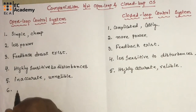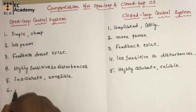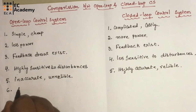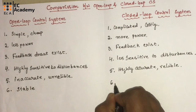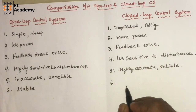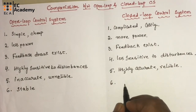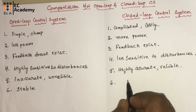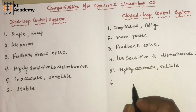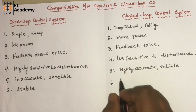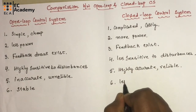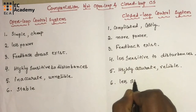Since the output is not measured in the open loop control system, we can say open loop control systems are stable systems. In case of closed loop control systems, since they have more circuit elements and output is measured, we can say they are relatively less stable systems.